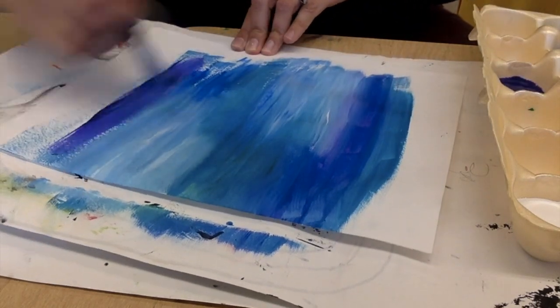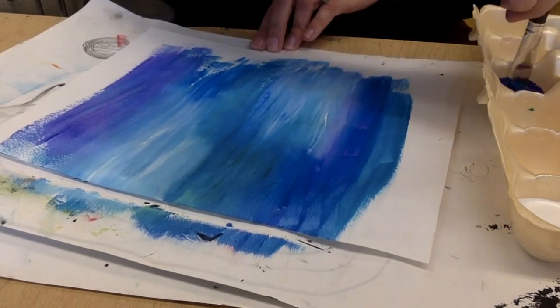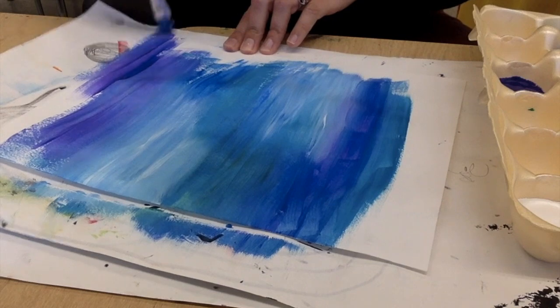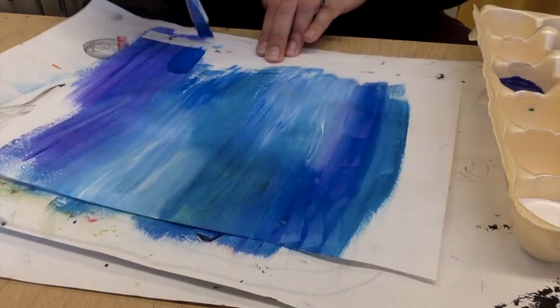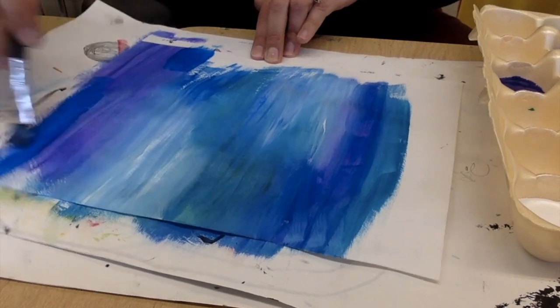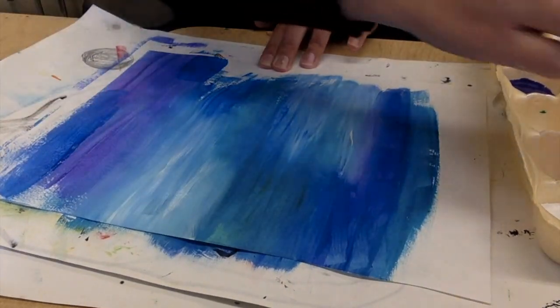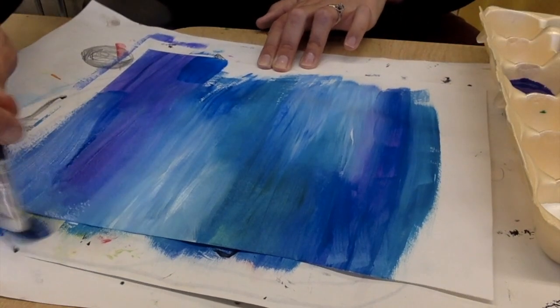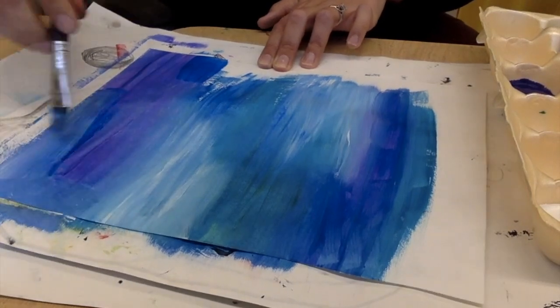Be sure that you are painting on your messy mat so that you are not making a big old mess on your table. The mess is okay as long as it's on your messy mat. I'm painting different colors. You can paint yours a solid color. You're the artist, you decide. You're going to paint your whole paper and then you will place this on the drying rack.